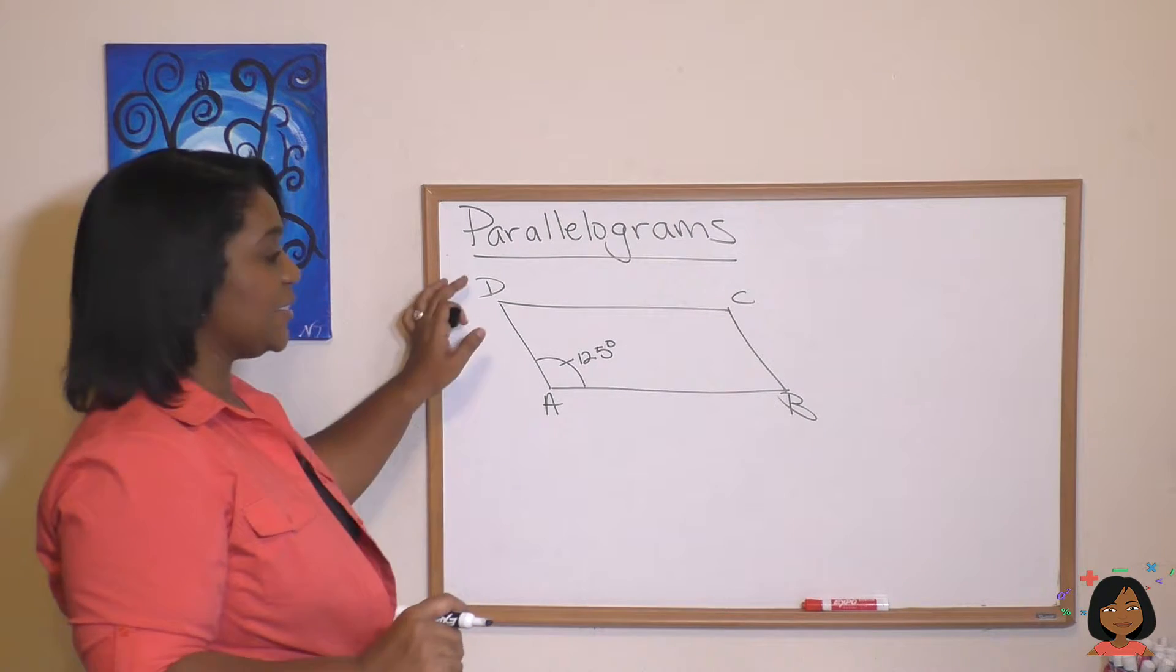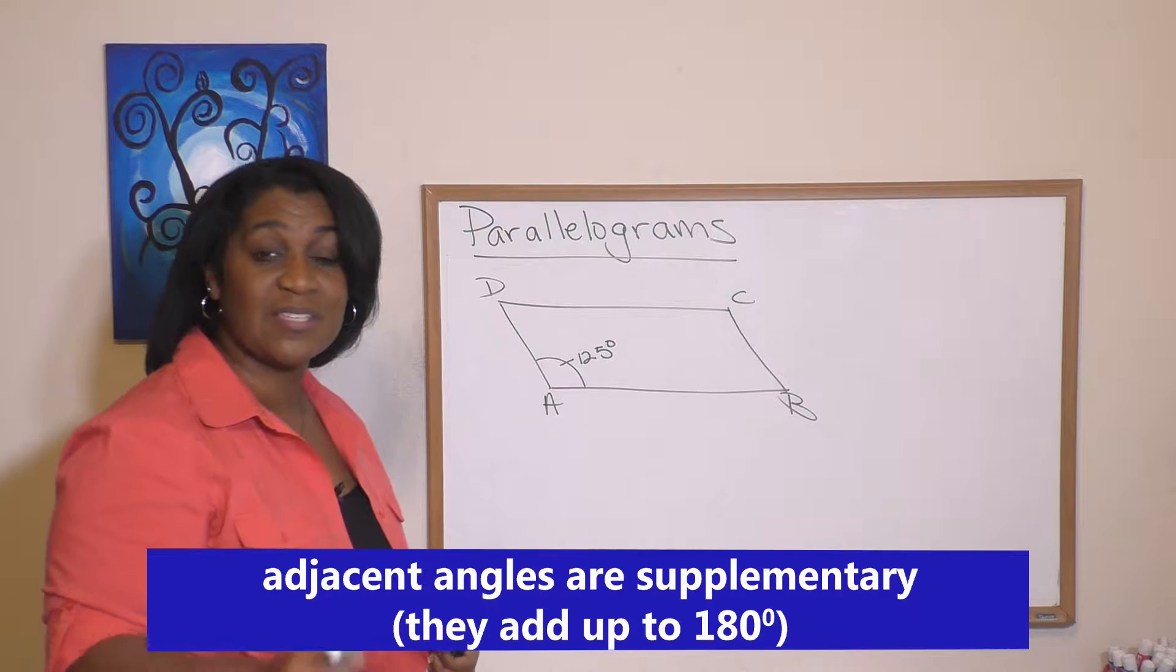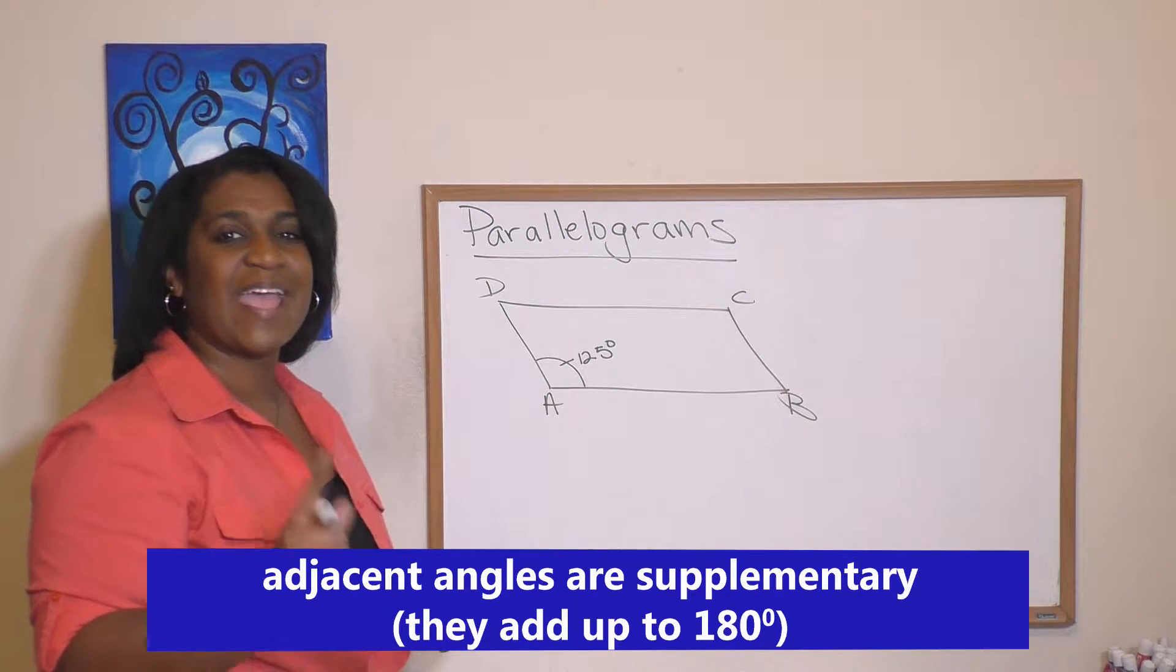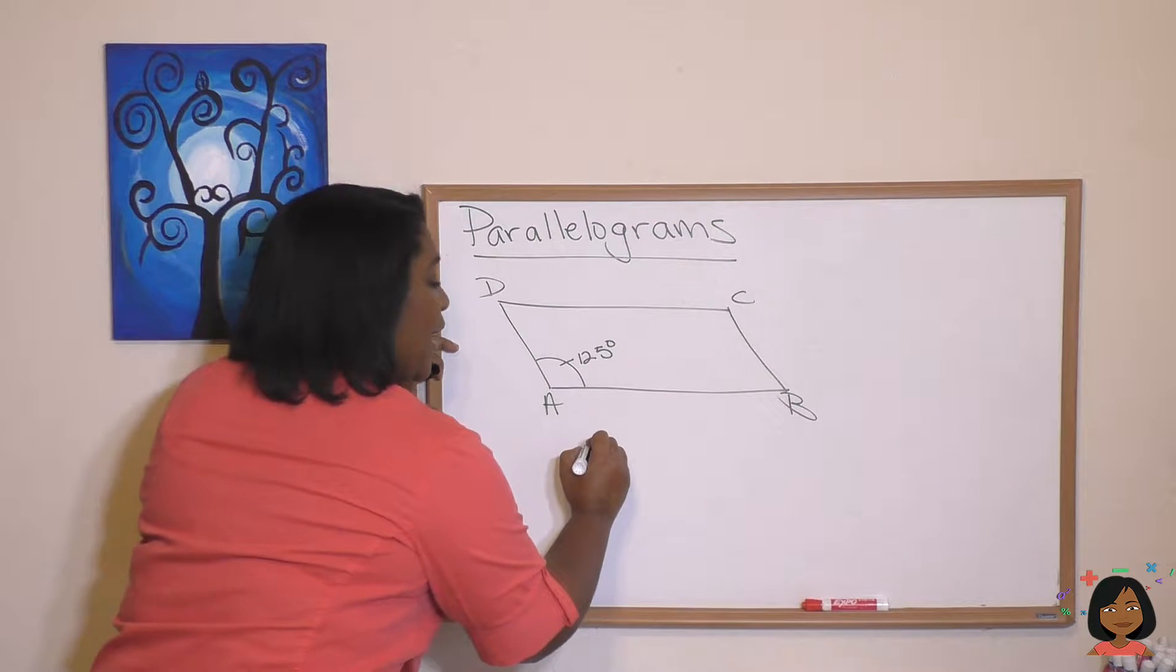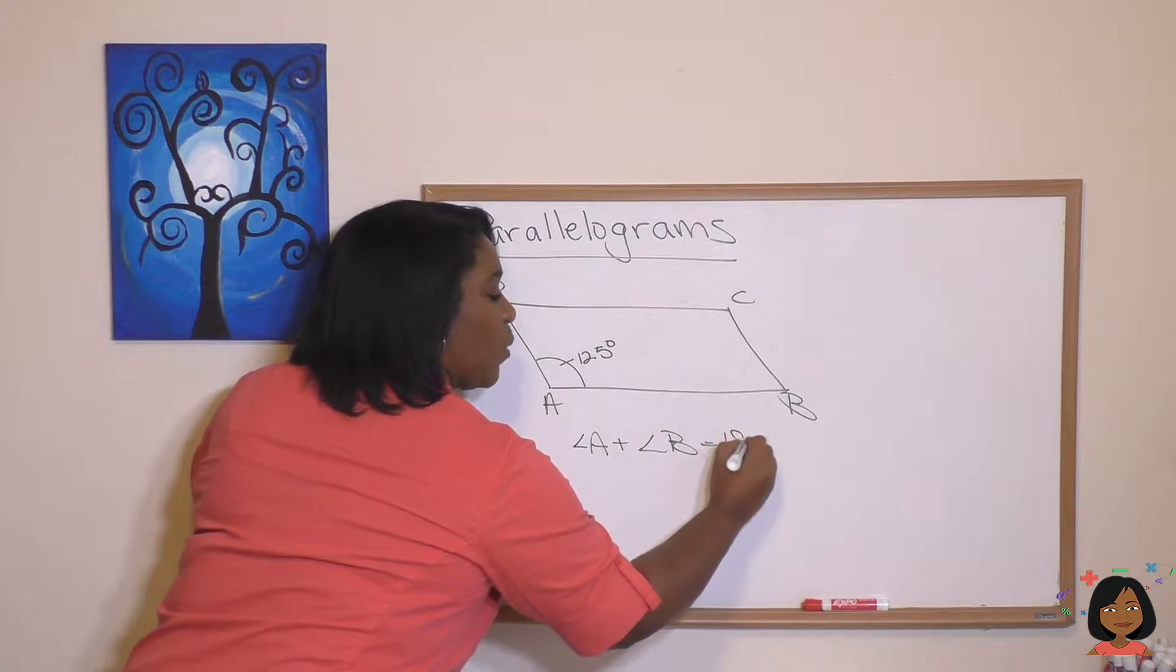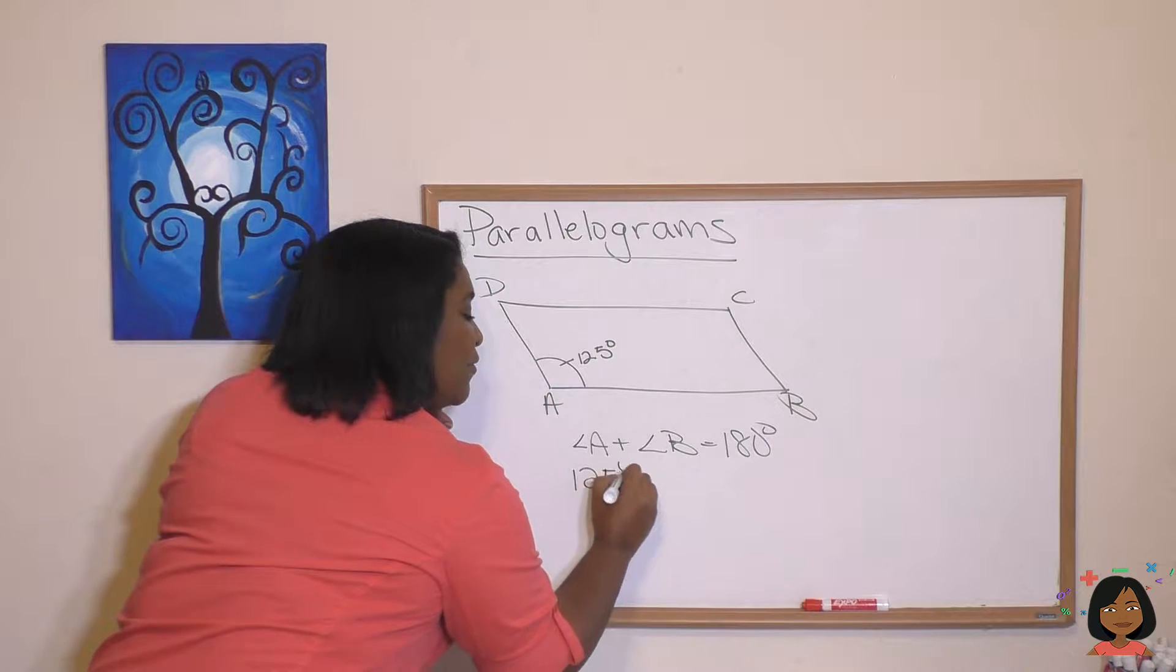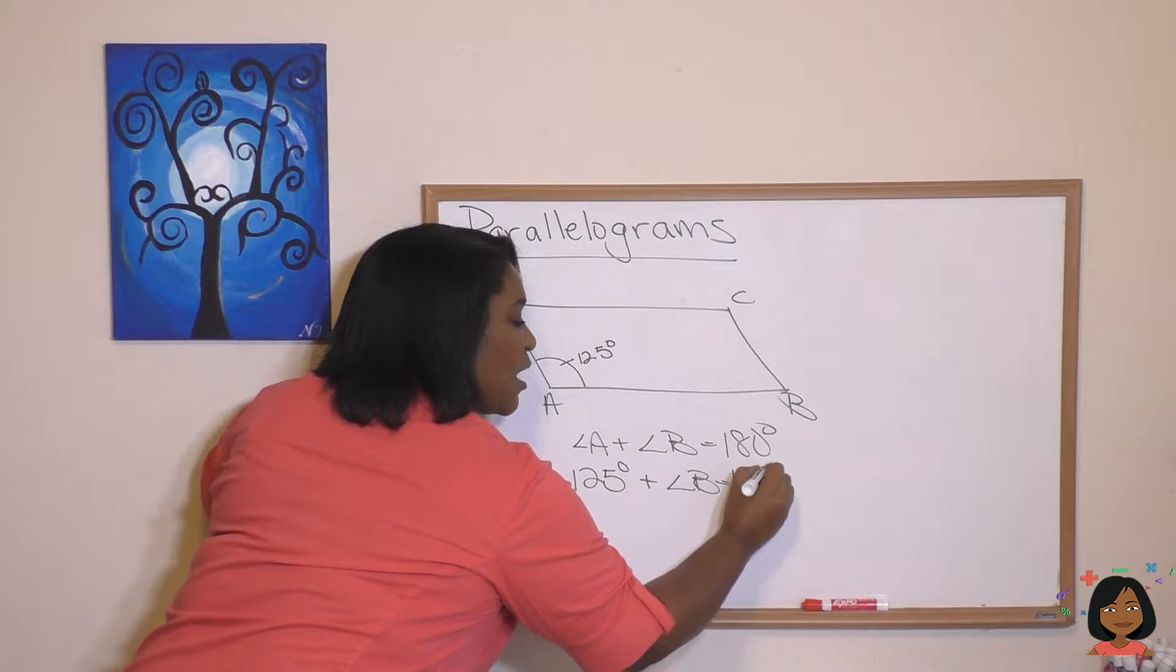So this is angle A, and an adjacent angle would be angle B. Another adjacent angle would be angle D. So what do we know? We know that adjacent angles are supplementary angles, and supplementary angles means that they add up to 180 degrees. So for example, angle A plus angle B is going to equal 180 degrees. Let's substitute what we know. We know that angle A is 125 degrees plus angle B will give us 180.